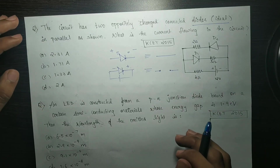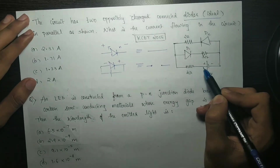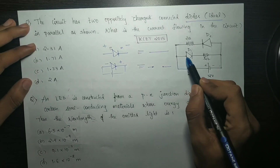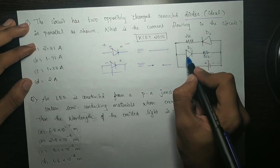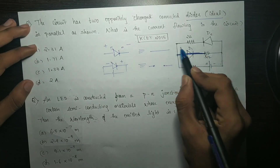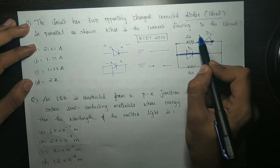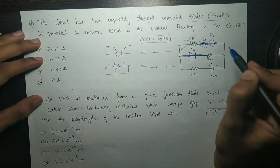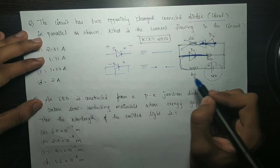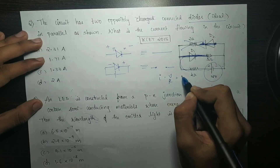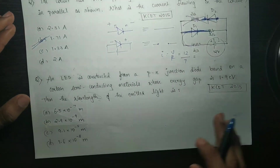What is the current flowing in the circuit? With respect to the battery, one diode is forward biased — short circuit — and the other is reverse biased — open circuit. The remaining resistors are 4 ohms and 3 ohms in series, giving 7 ohms total. I equals V by R: 12 divided by 7 equals 1.71 amperes. Option B is the answer.